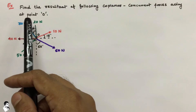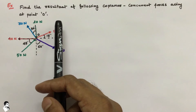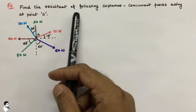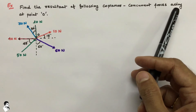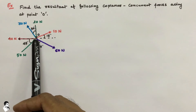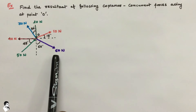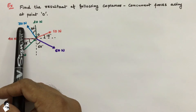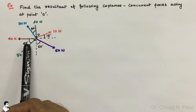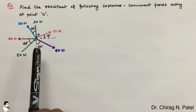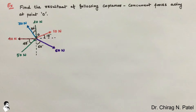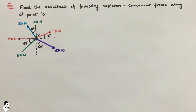Let us look at an example based on the method of resolution of force. Here, find the resultant of the following coplanar concurrent forces acting at point O. The different forces acting are 20 Newton, 10 Newton, 60 Newton, 50 Newton, 40 Newton, and 30 Newton, at different angles with respect to the X and Y axes. To find the resultant and its direction, we use the fundamental method of resolution of a force.